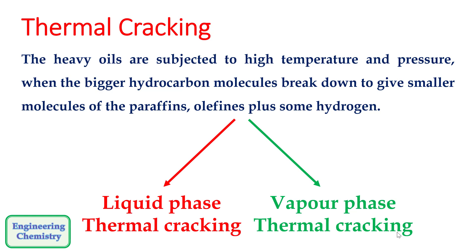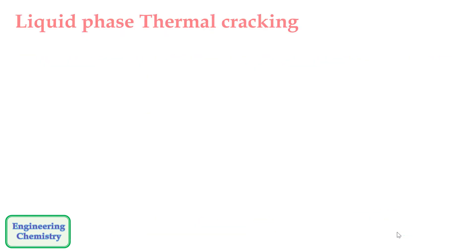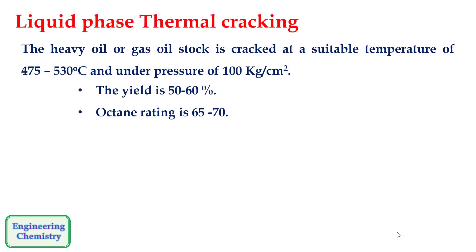Thermal cracking is of two types: liquid phase thermal cracking and vapor phase thermal cracking. In liquid phase thermal cracking, the heavy oil is cracked at a temperature of around 475 to 530°C and under a pressure of 100 kg/cm². The yield is around 50 to 60% and the octane rating is around 65 to 70, which is relatively low.